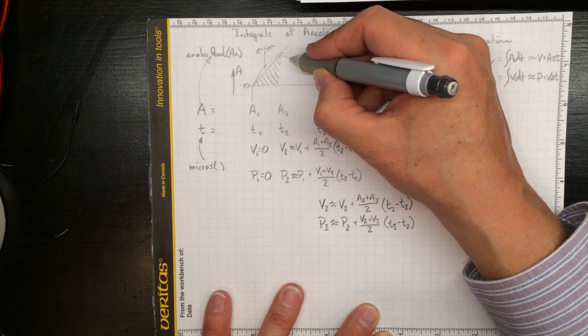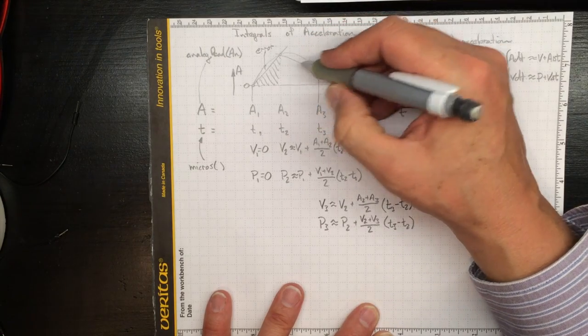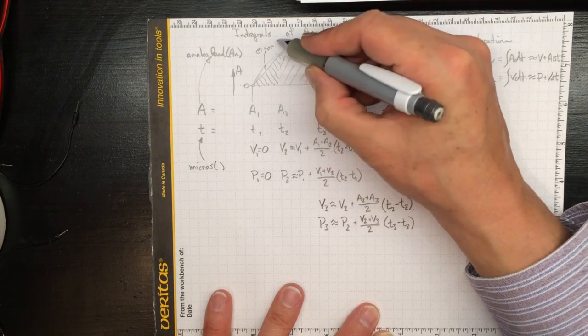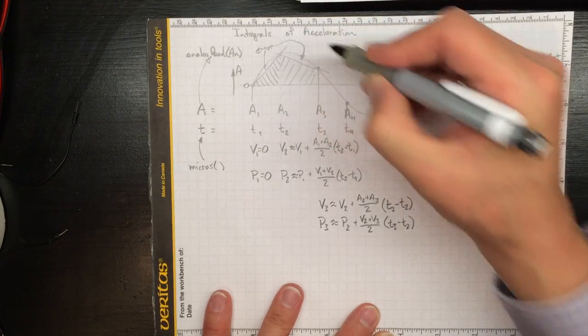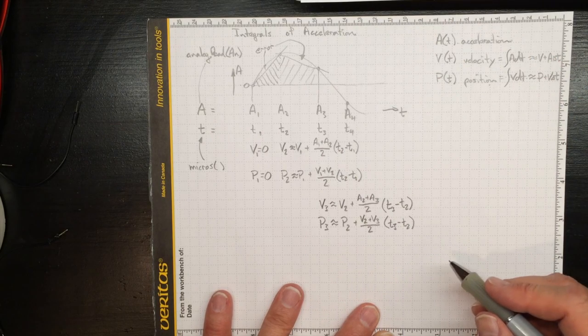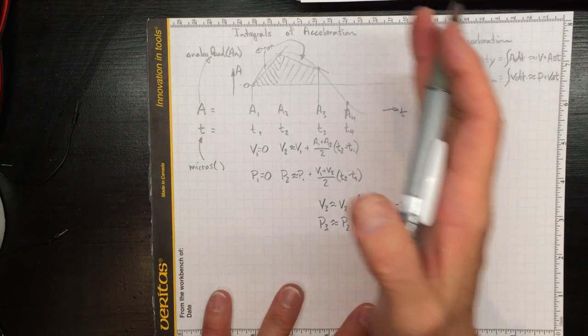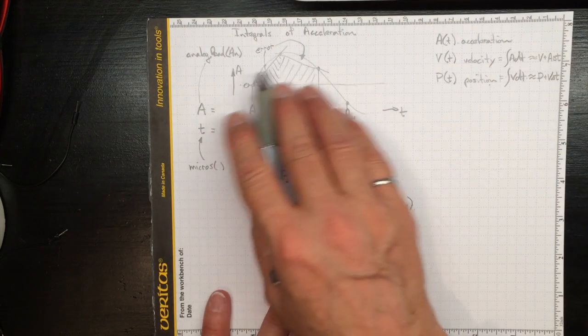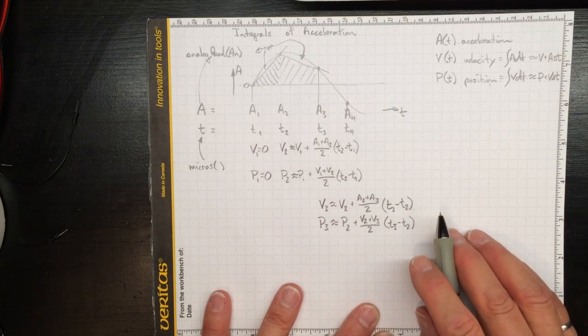Now every time we do this, we're estimating the area under the curve with this crude estimate and we're getting an error here when we don't get our estimate right. But again, if we push those close enough together, we could get a pretty good estimate of the area under the curve.